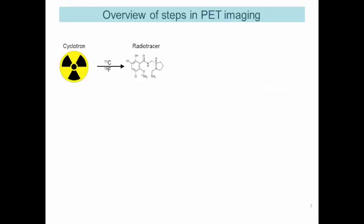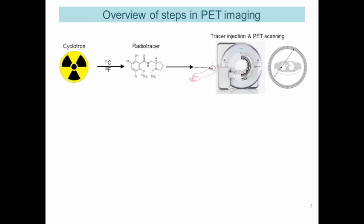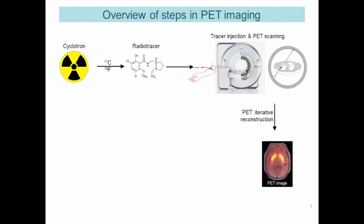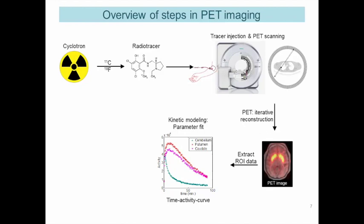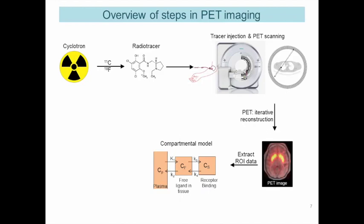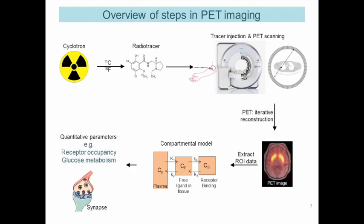In this talk, I want to go step by step through all the elements needed to do a successful PET scan. We'll start with the cyclotron — radioisotope production and the radiotracer itself — which is then injected into a subject and we acquire PET images. Then images need to be reconstructed. From this we usually extract region of interest data and look at time activity curves, which we can model with a compartmental model to get outcome parameters relating to biological mechanisms such as receptor occupancy or glucose metabolism.